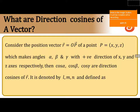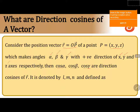Now we are going to discuss the direction cosines of a vector. We will consider a position vector r equals to OP, where the point P is given by coordinates x, y, z. This point P makes angles with the x, y, and z axes. The angle made by P with respect to the x axis is alpha, with respect to the y axis is beta, and with respect to the z axis is gamma. The direction cosines of these angles are cos alpha, cos beta, and cos gamma, which are the direction cosines of vector r.